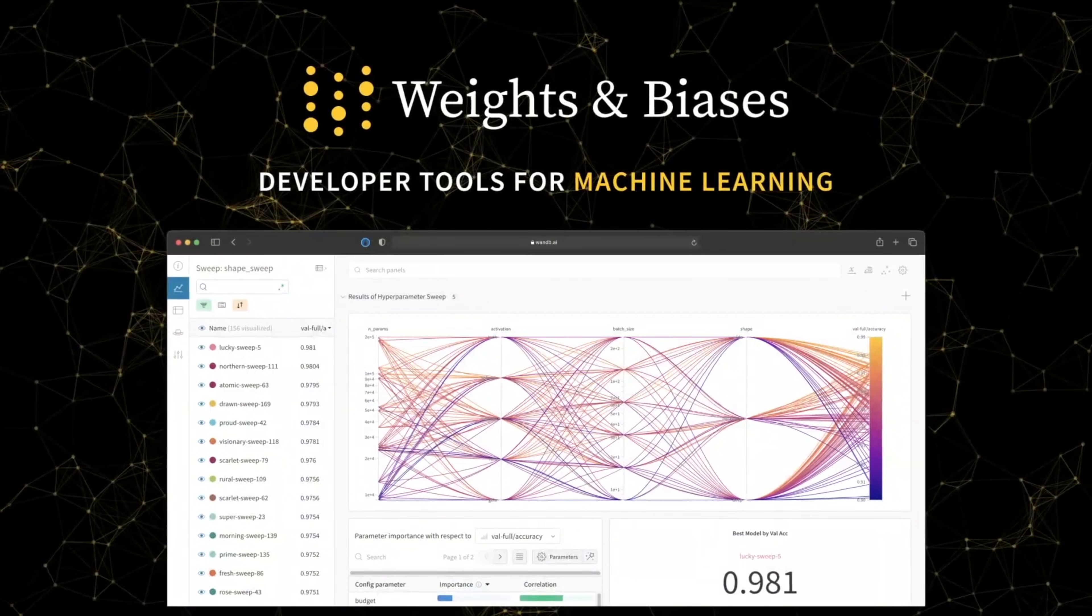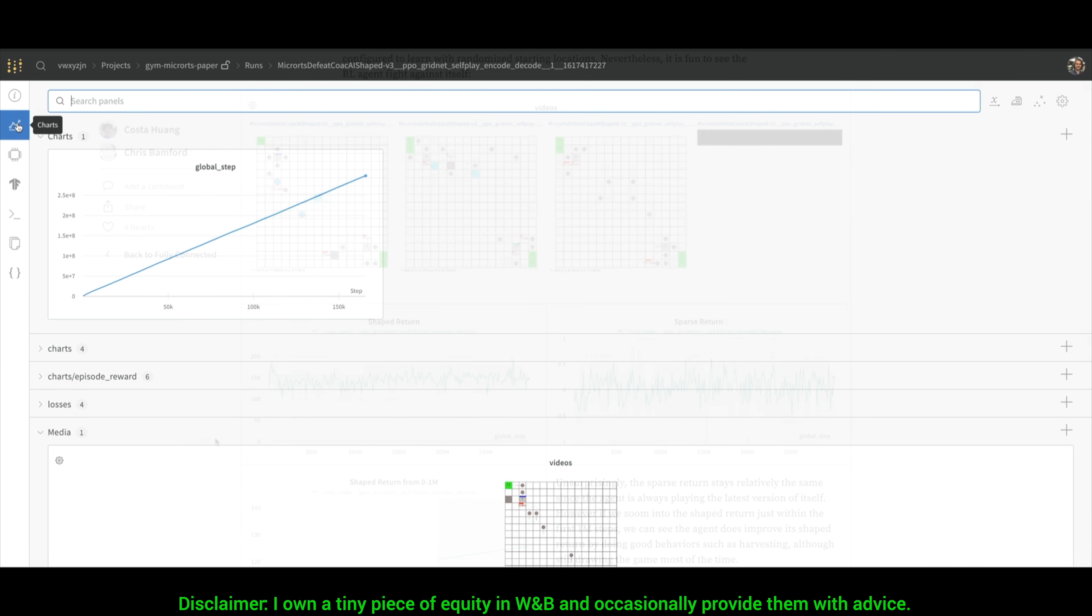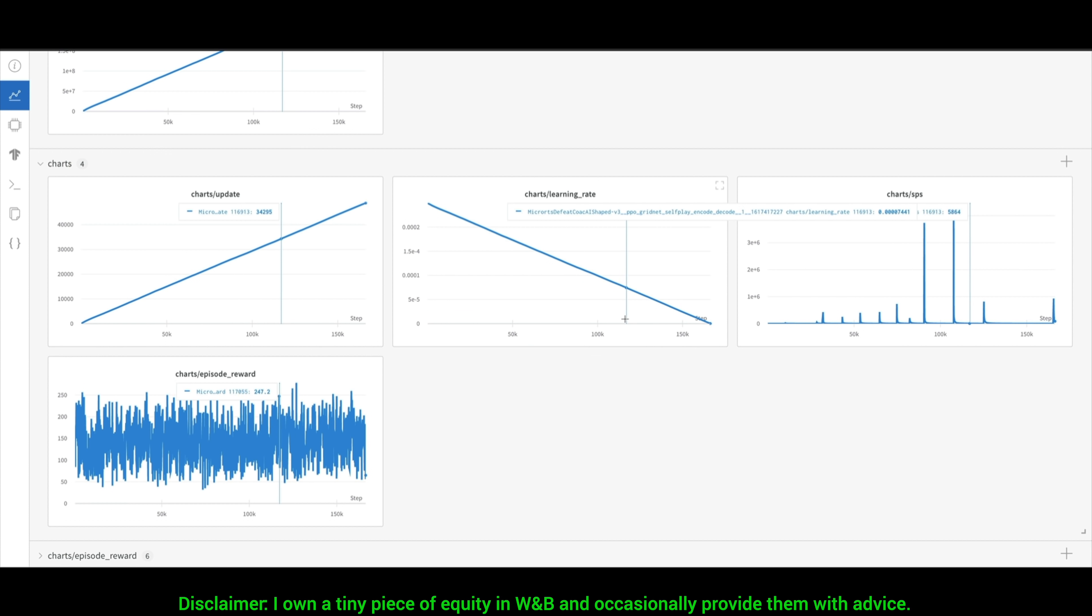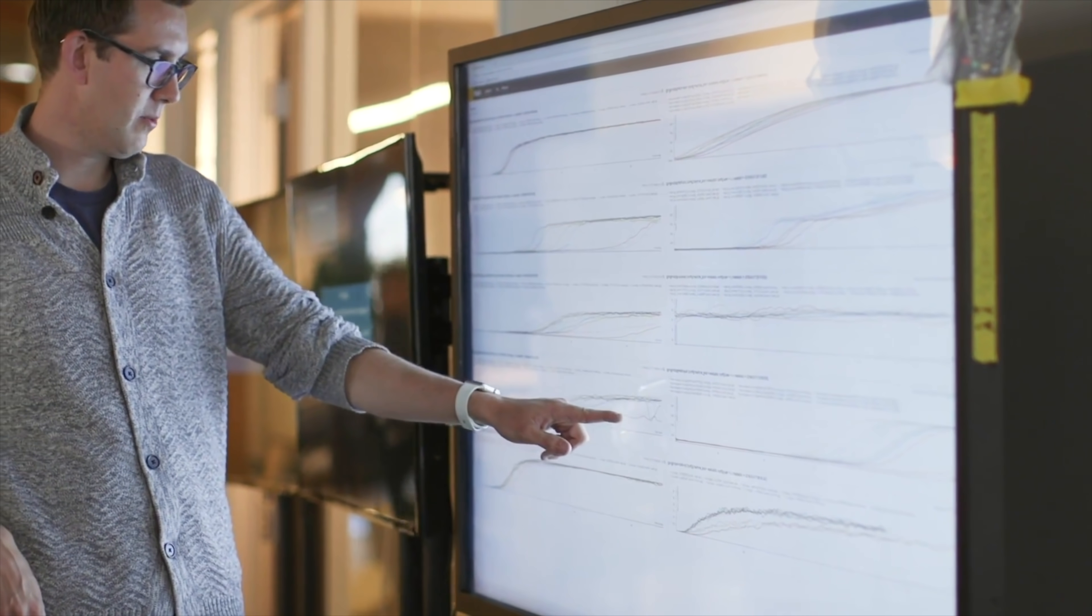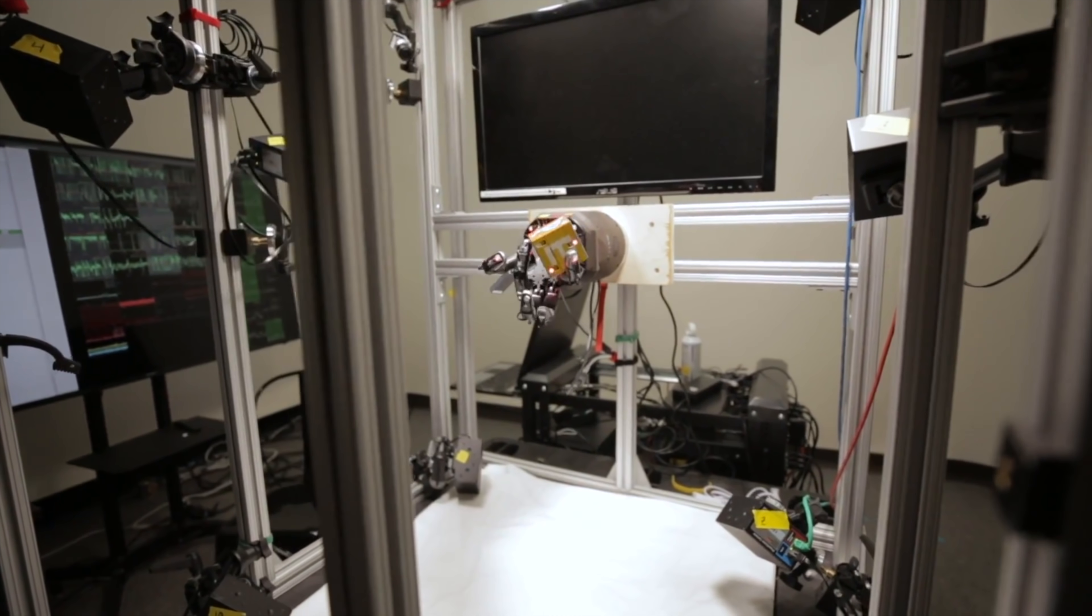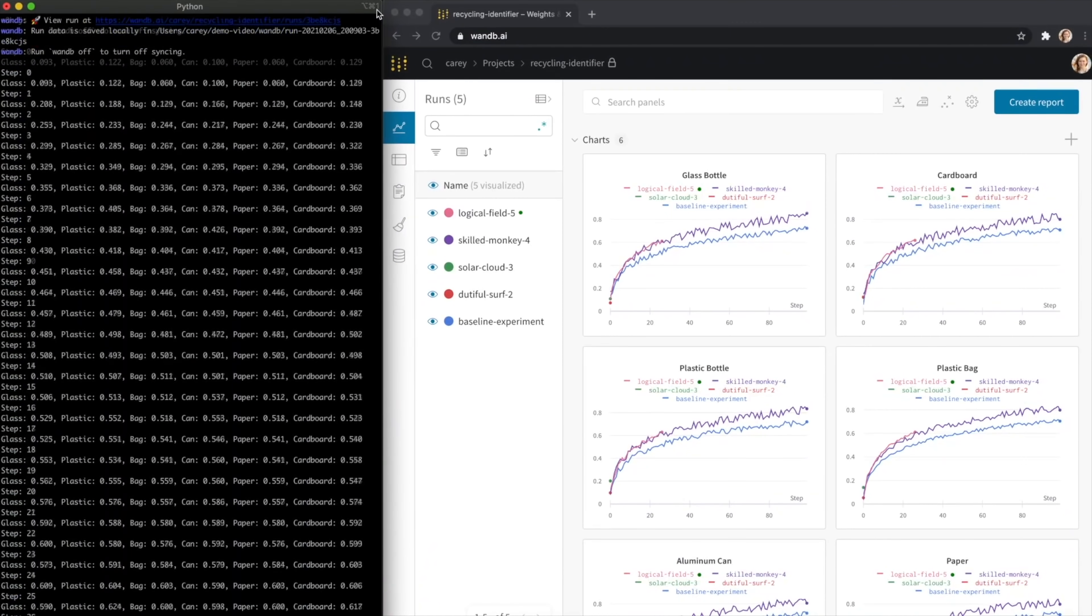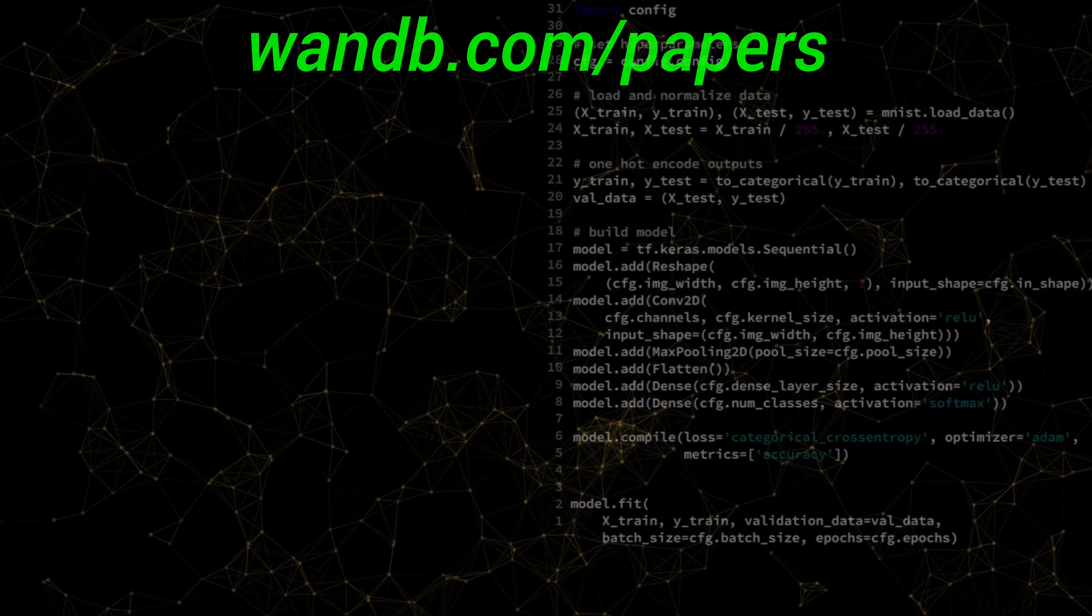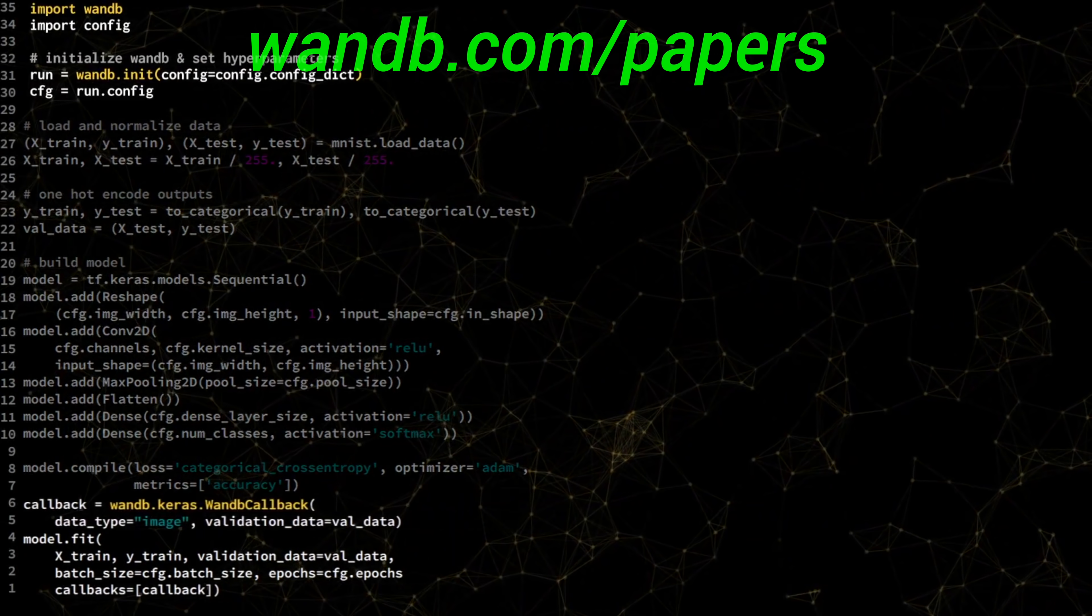Weights & Biases provides tools to track your experiments in your deep learning projects. Using their system, you can create beautiful reports like this one to explain your findings to your colleagues better. It is used by many prestigious labs including OpenAI, Toyota Research, GitHub, and more. And the best part is that Weights & Biases is free for all individuals, academics, and open source projects. Make sure to visit them through wnb.com/papers or just click the link in the video description and you can get a free demo today.